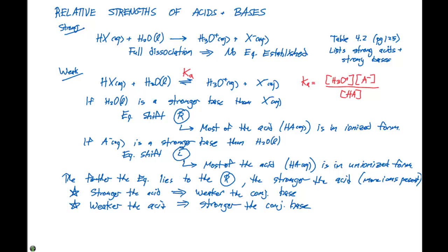So if we have a strong acid, our equilibrium is gonna shift over to the right, and our Ka is going to be large. Because if our Ka is large, that means we have a large concentration of H3O plus and X minus in solution.